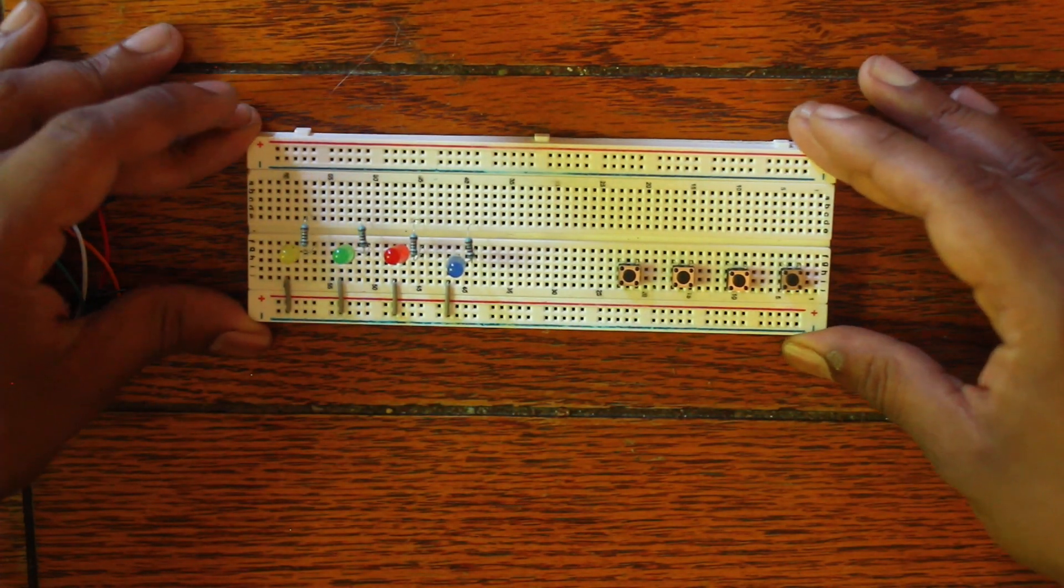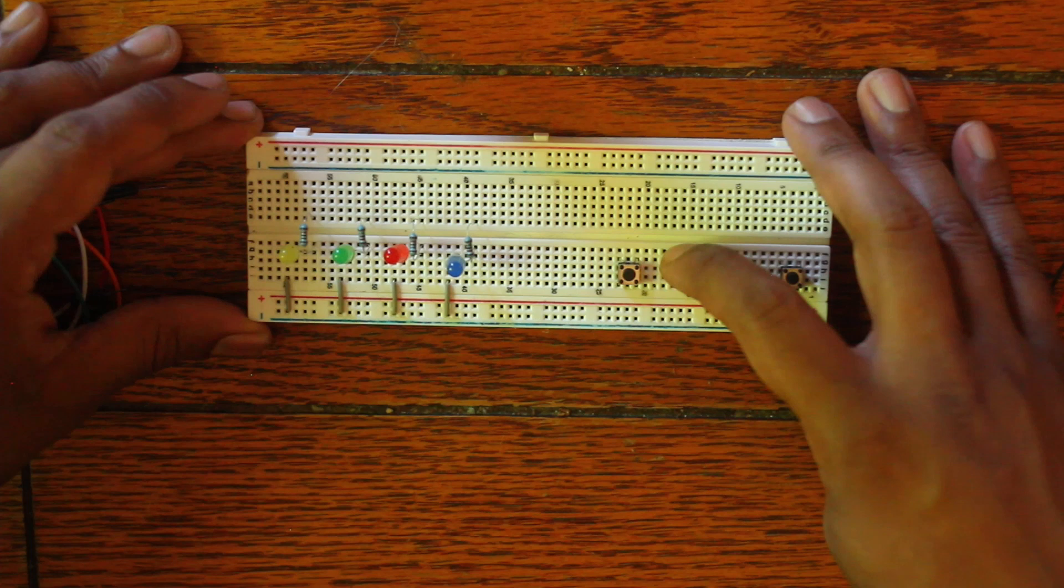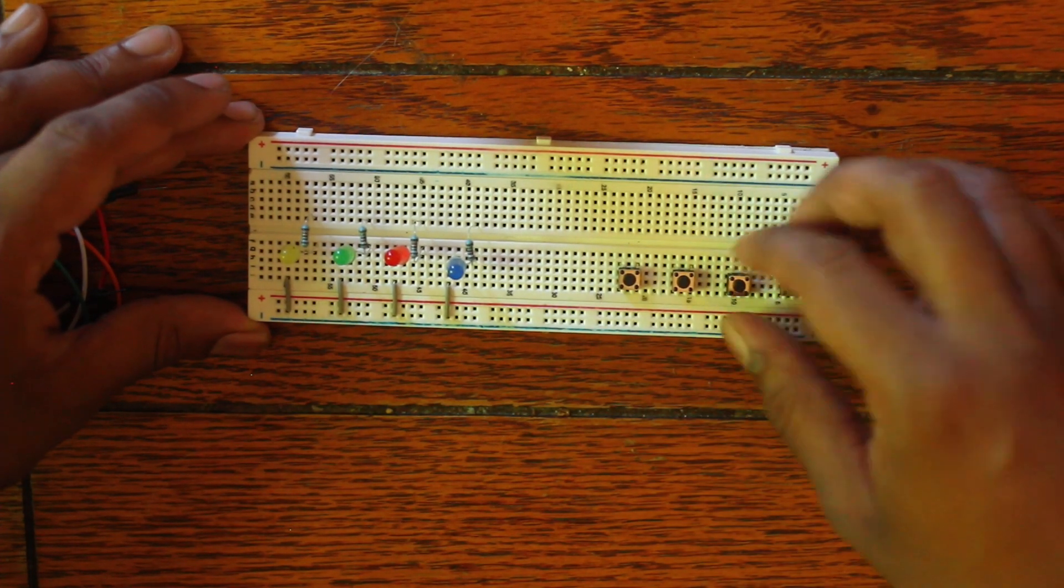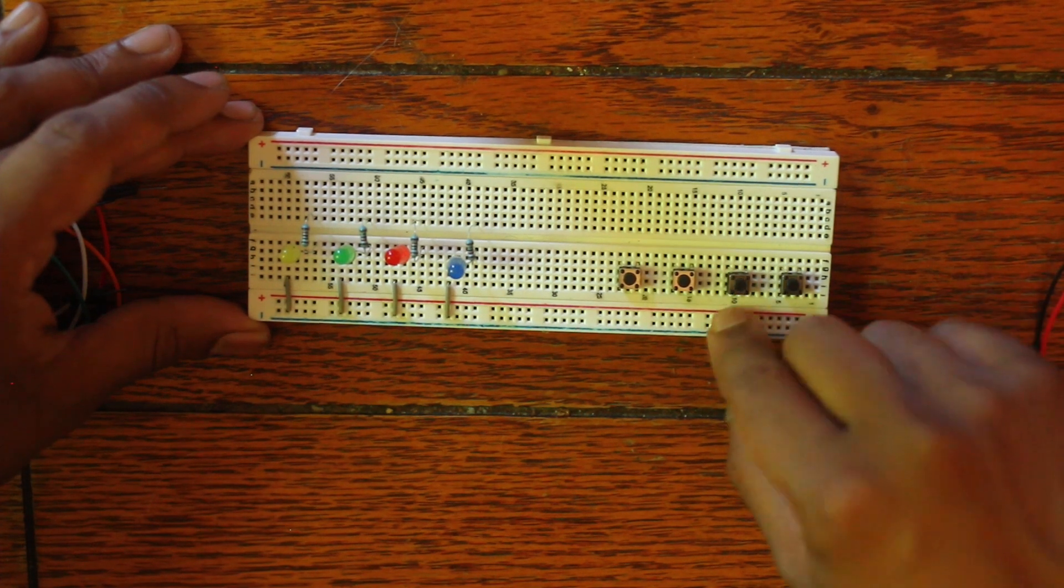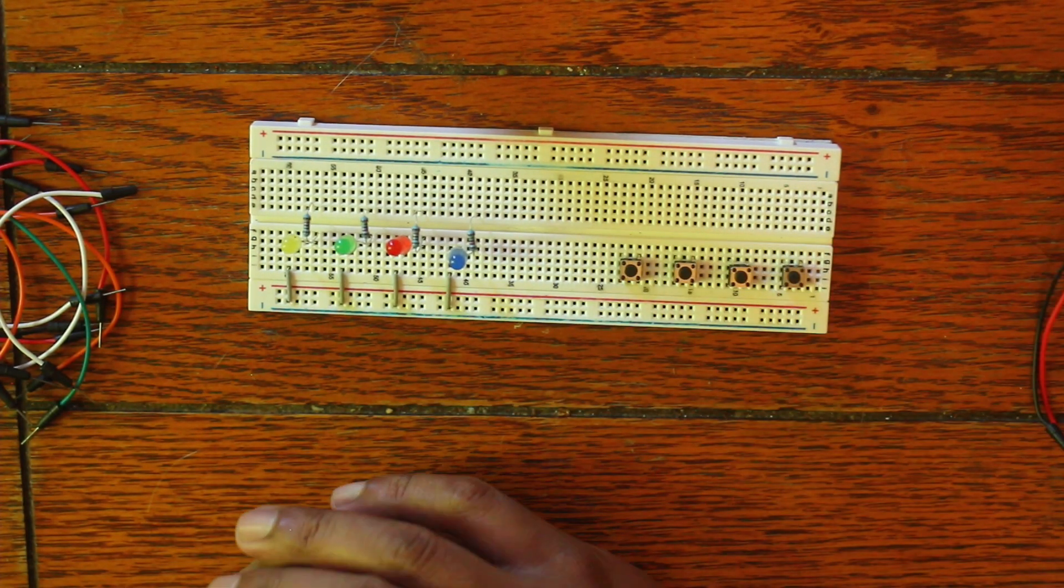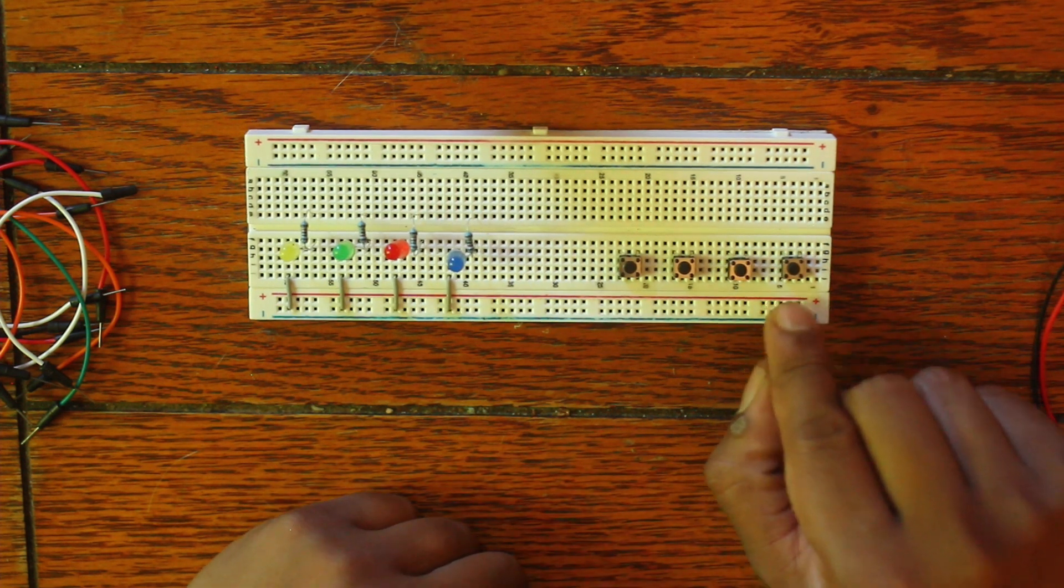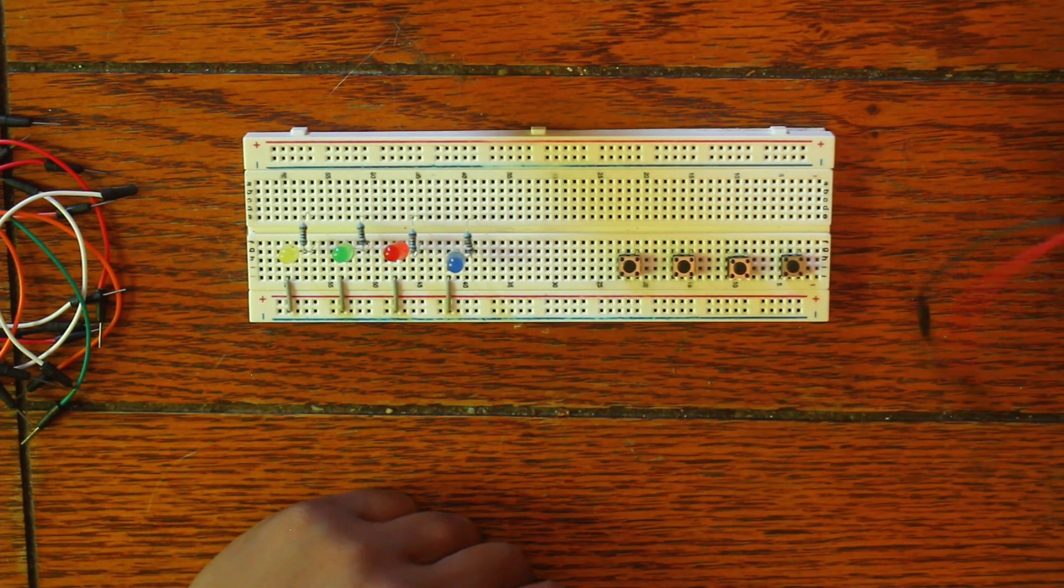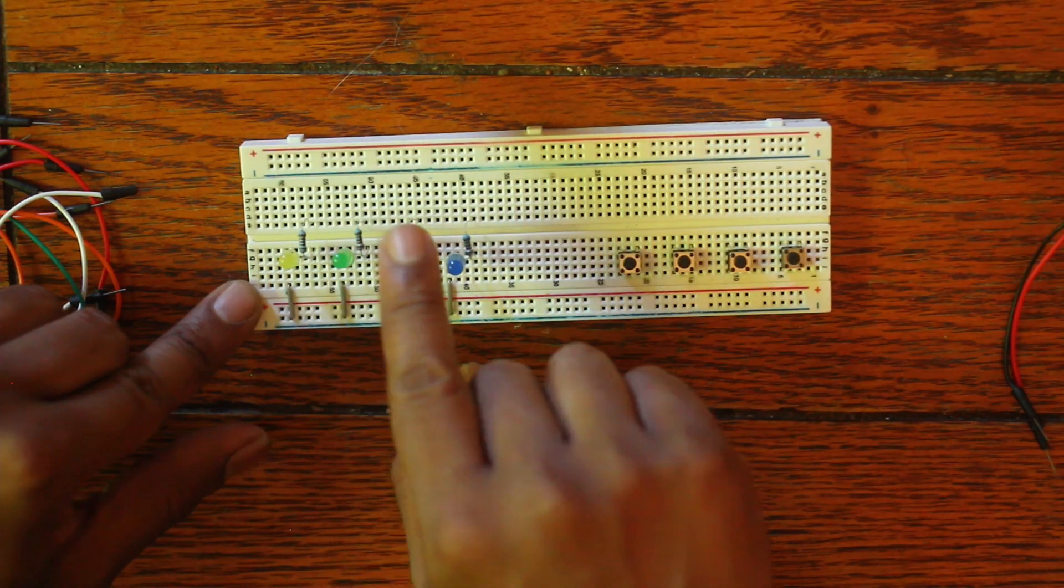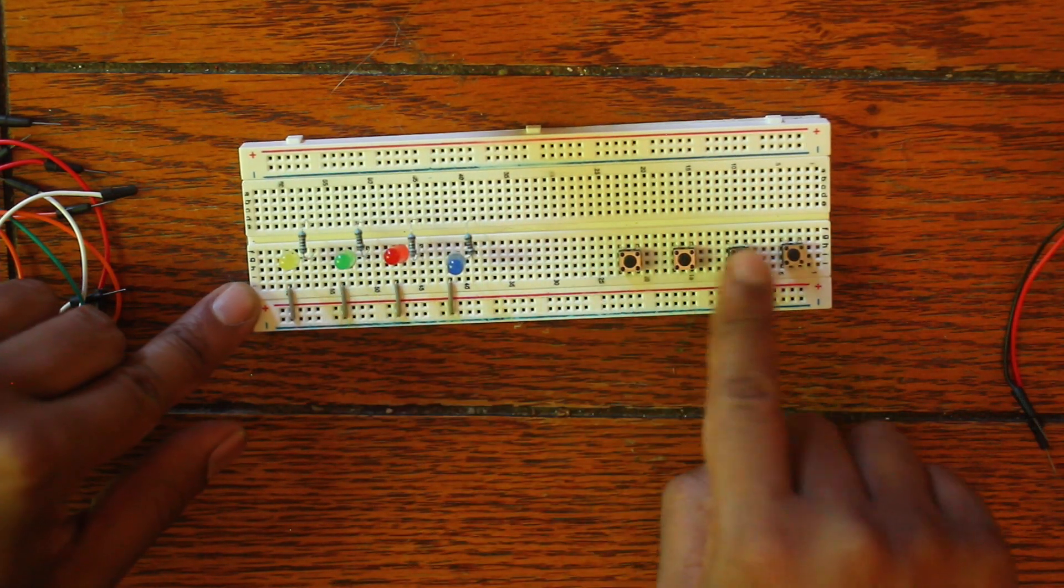If your circuit doesn't work by the end of this, the most common point of failure at least for me was the pins of these buttons. And I would also recommend, you know, doing one button first with one LED just making sure that it works this way and that you don't have a dead battery. The next thing we're going to do is start wiring each one of these to one of the buttons.